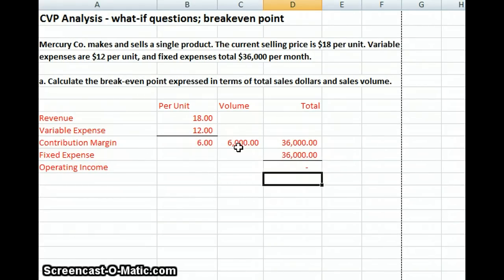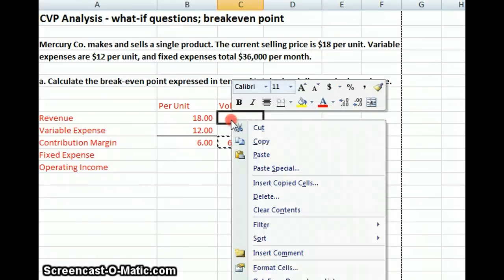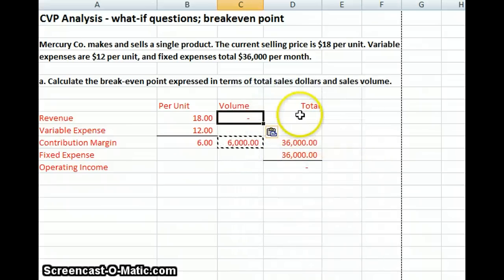We can figure out what the sales volume is a couple ways. We'll just make that $6,000 and take that times our sales price and that gives us $108,000.